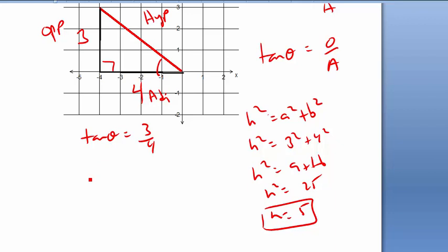So h must equal 5. So then if I got tan theta is that, then cos theta must be adjacent over hypotenuse, the adjacent, so it's 4 over 5. Sine theta equals opposite over hypotenuse, so it is 3 over 5.